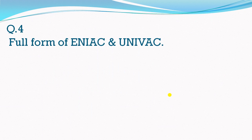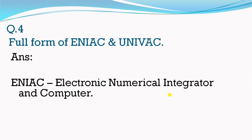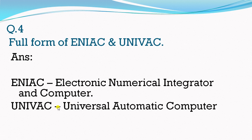Name the full form of ENIAC and UNIVAC. ENIAC stands for Electronic Numerical Integrator and Computer — the correct answer is computer, not calculator. Next is UNIVAC: Universal Automatic Computer. If somewhere I have told you calculator, please forgive — that will be computer only.